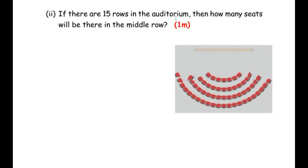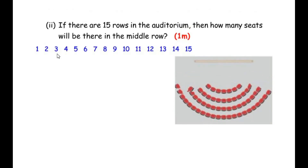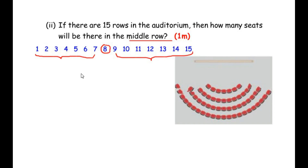If there are 15 rows in the auditorium, how many seats will be there in the middle row? The first step is to find which row number represents the middle row. Writing all 15 row numbers, we can see that 8 is the middle row — there are seven numbers below 8 and seven numbers above 8. Alternatively, divide 15 by 2 to get 7.5, then round up to the next higher number, which is 8. So the middle row is row 8.